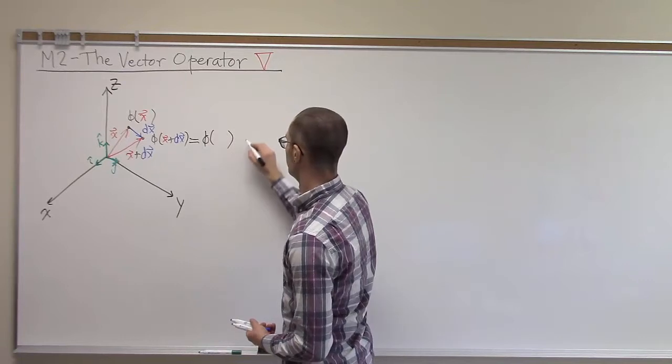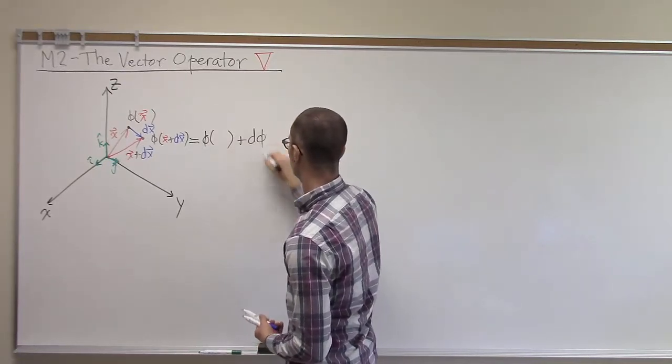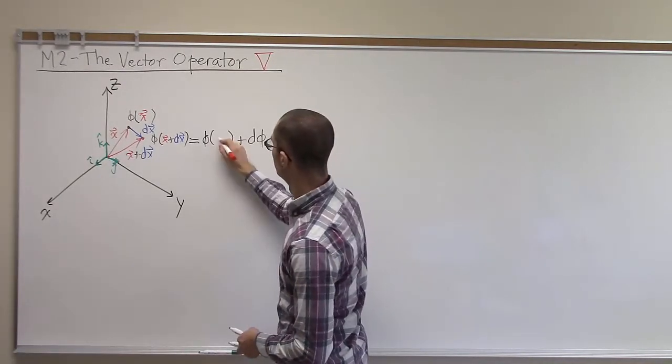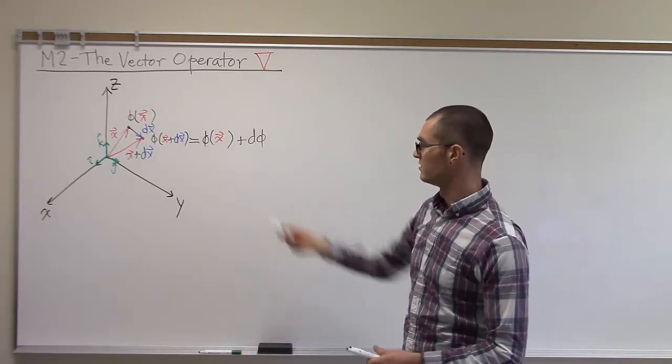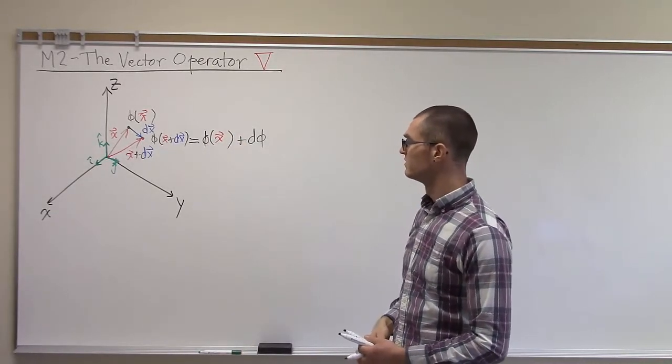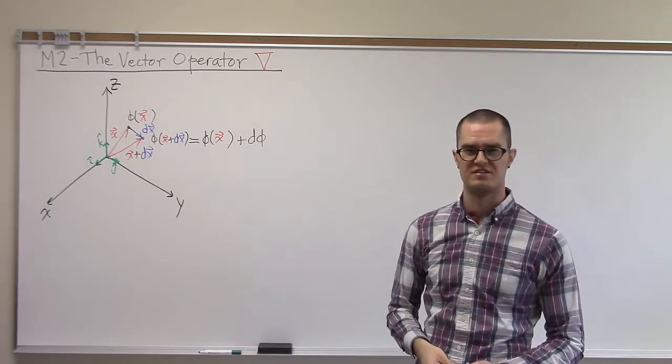So phi of x plus dx is equal to phi of x plus some small change d phi.